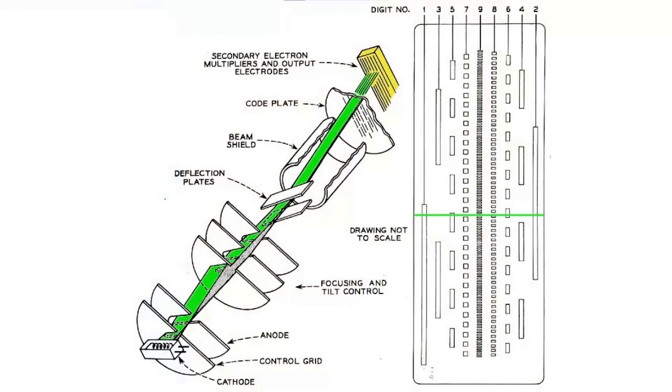That portion of the beam which intersects the code plate at an aperture position in a particular column penetrates to the target block and generates secondary electrons, which are picked up by the nine output electrodes, one electrode for each bit position.